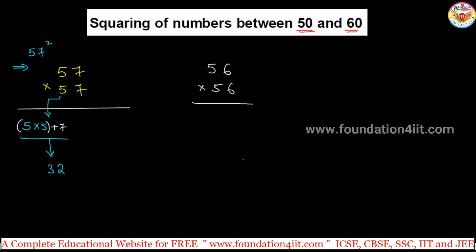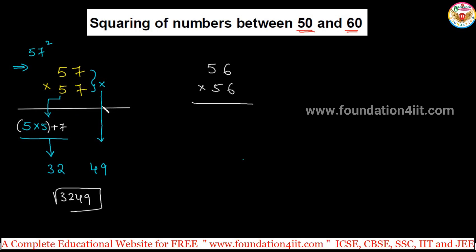just multiply the right side numbers - both of them. That is 7 into 7 is 49. Simple! 3249 is the answer. 3249 is the 57 square. Only for this particular specific combination you can use this.